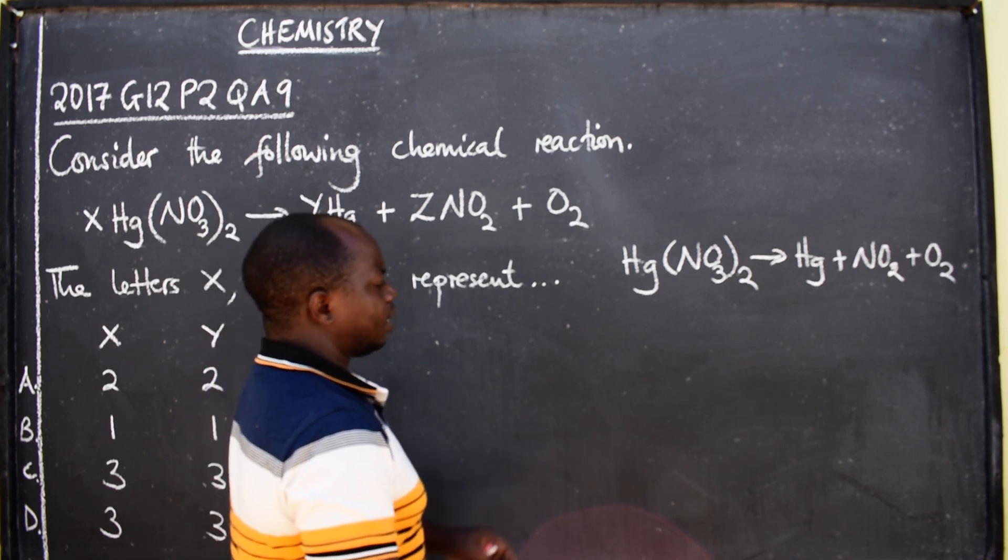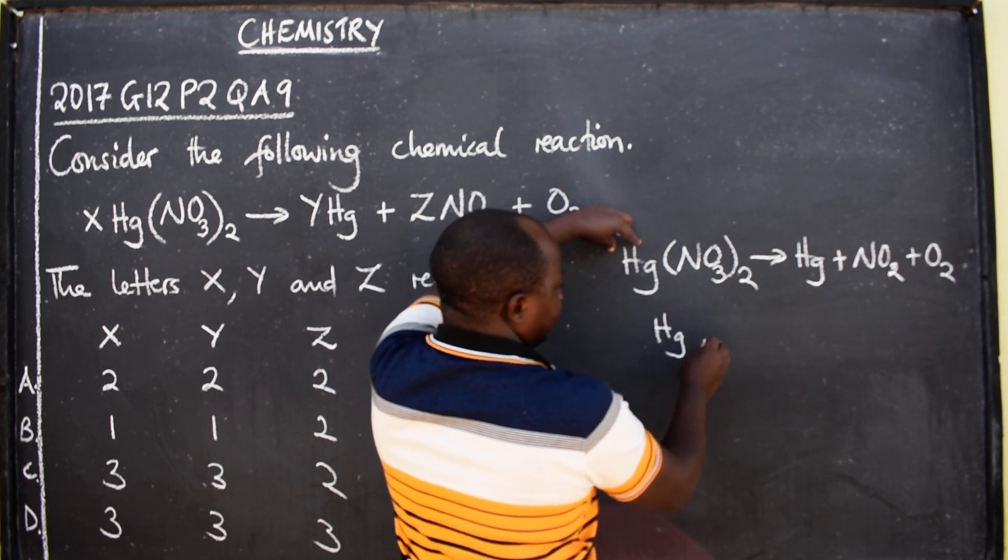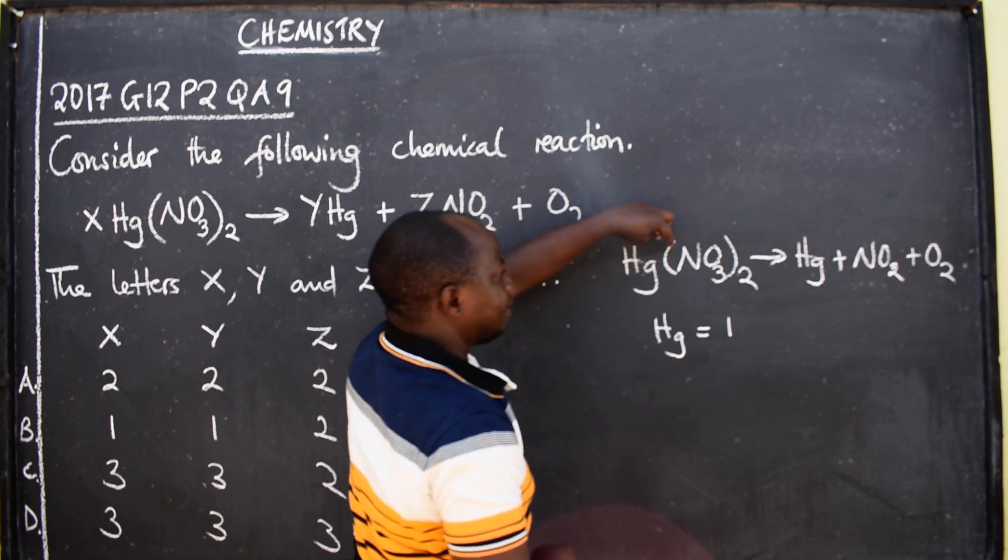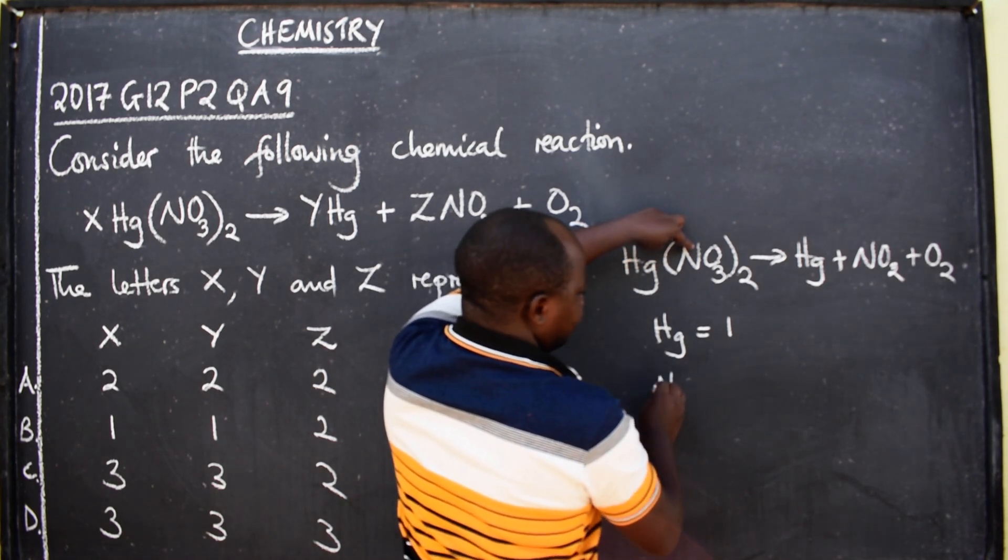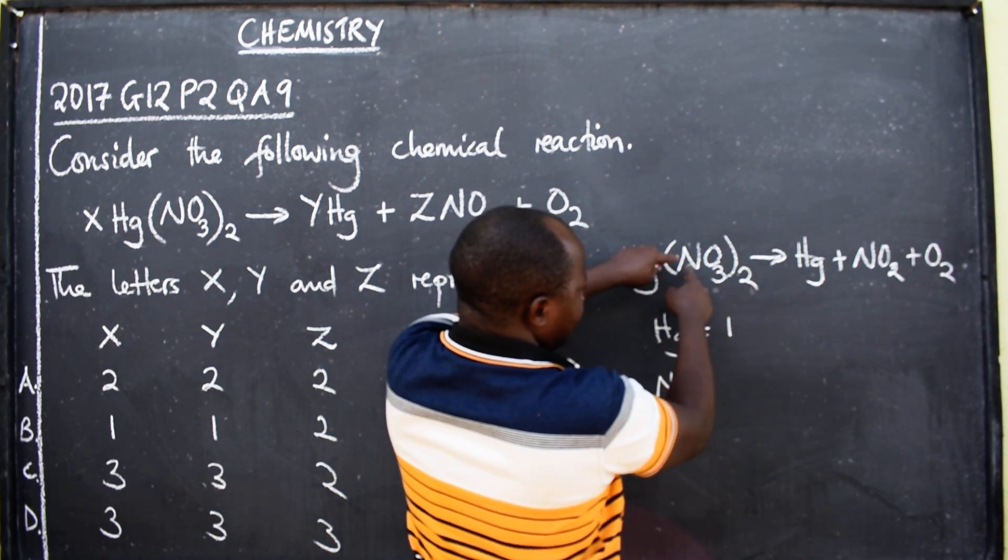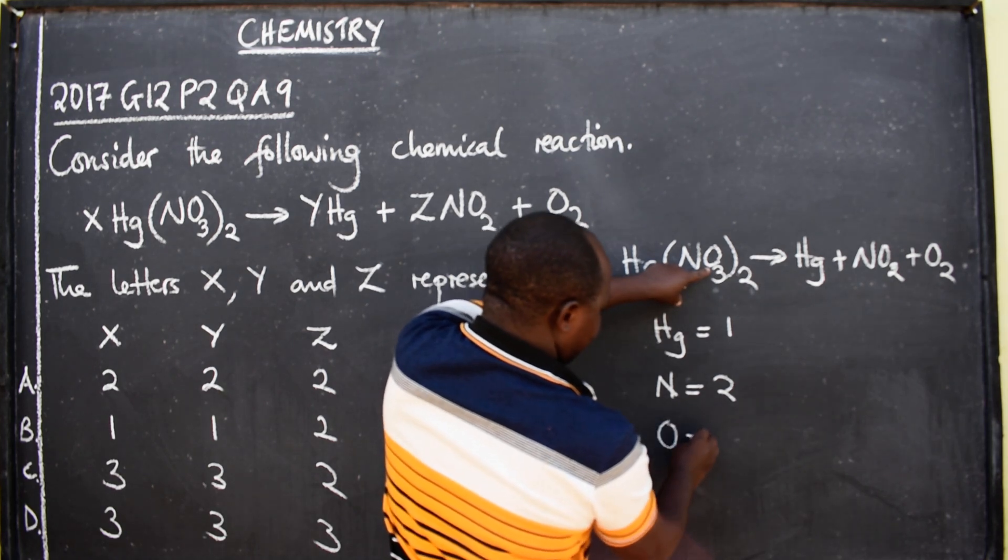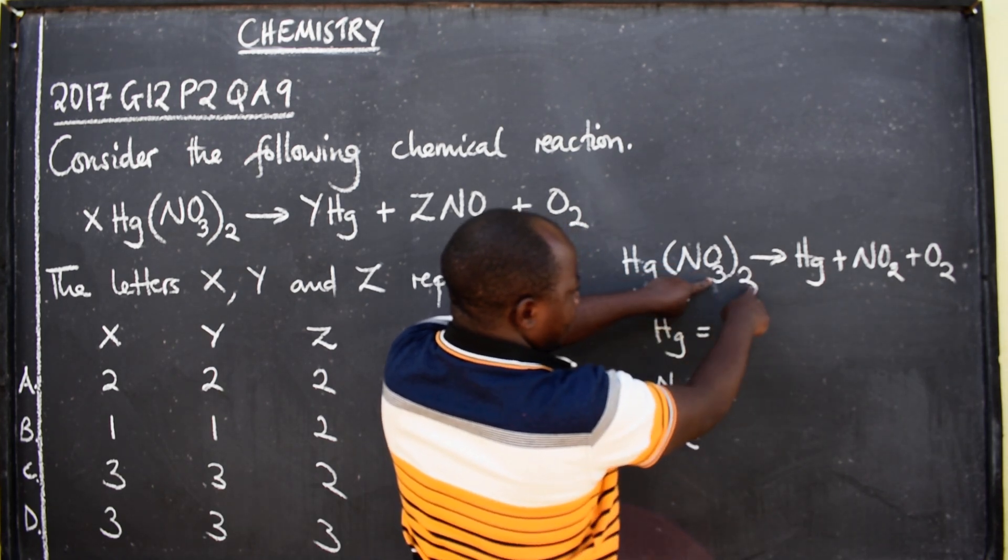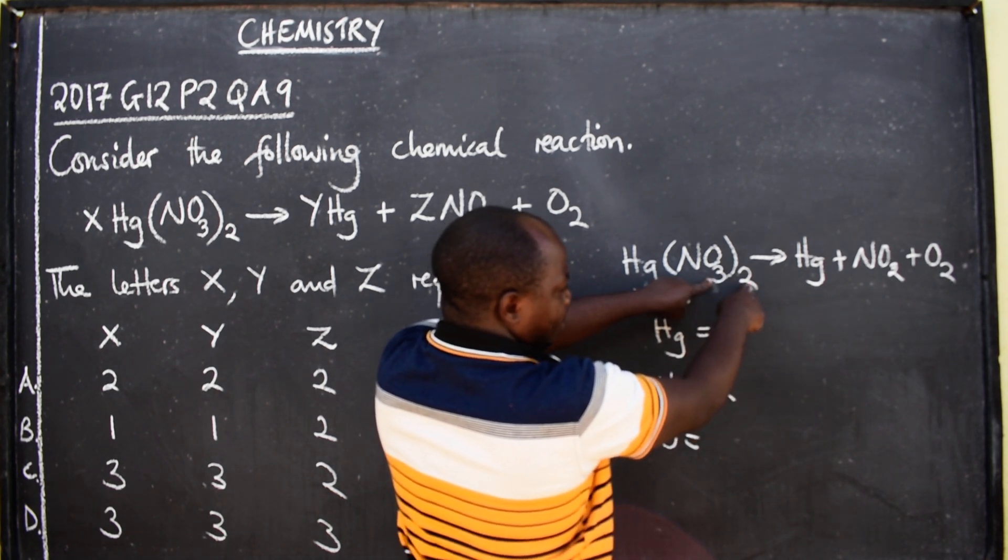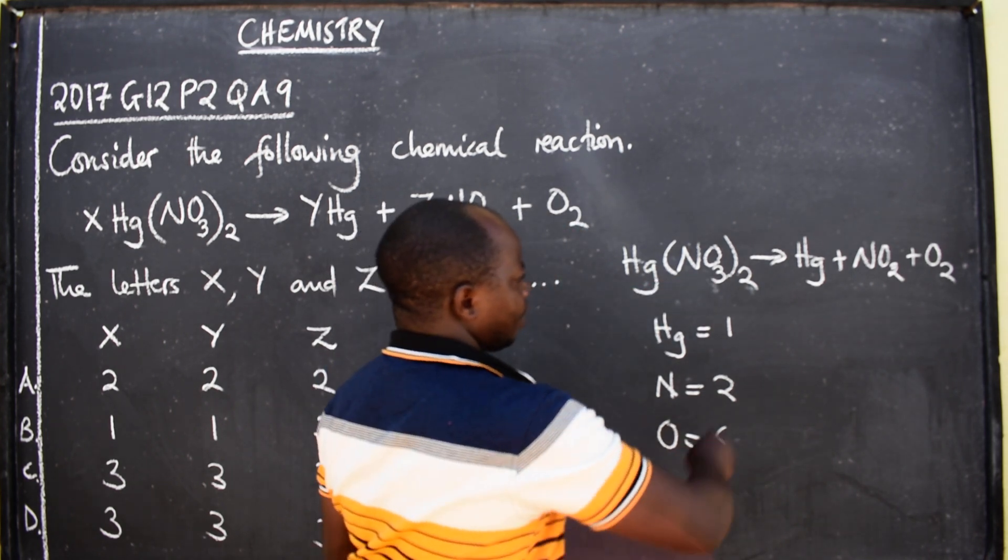Let's list down elements that are here. We have mercury - how many? Only one. We have nitrogen - how many? Remember it's in brackets, so nitrogen two of them. We have oxygen: three times two gives you six, so there are six oxygen on the left side.